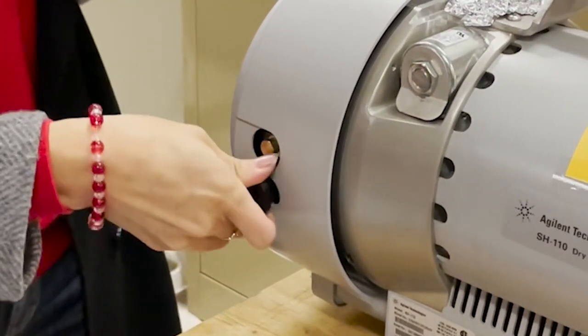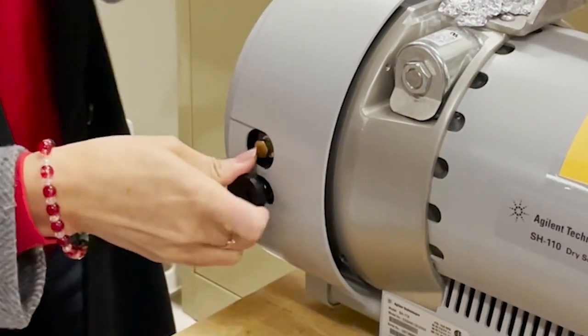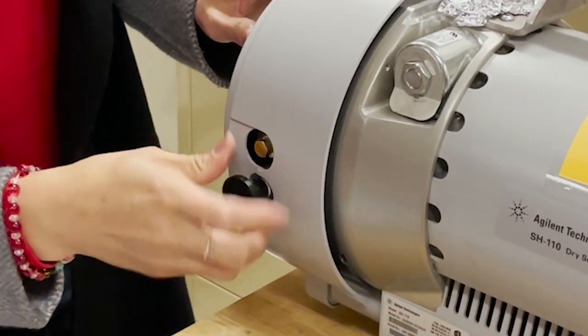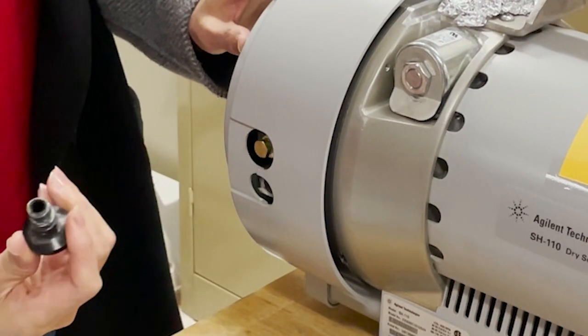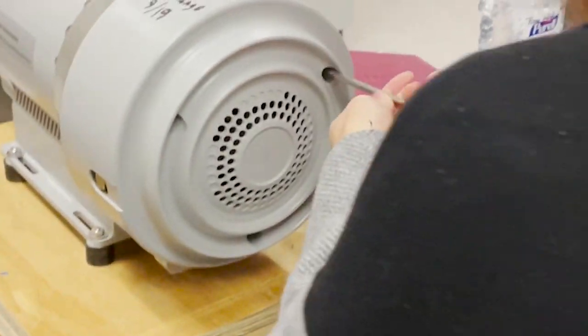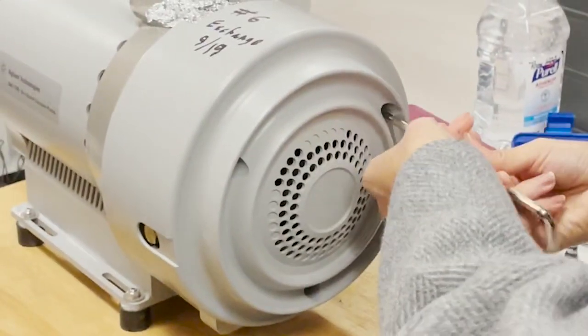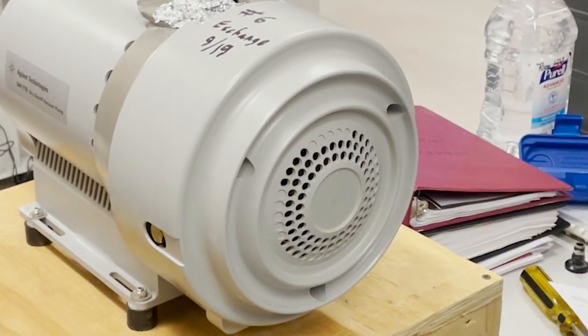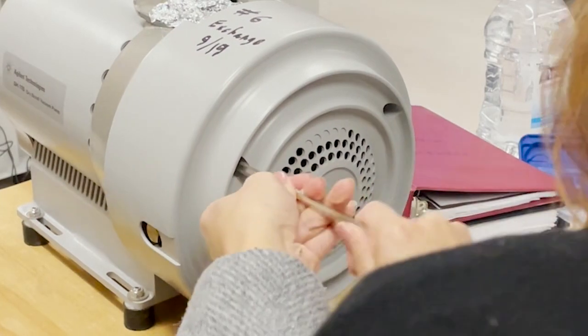So now we're going to remove the exhaust cap. Now there are three M8 bolts, which we remove with a 6 mm Allen wrench. That's the front cowling.